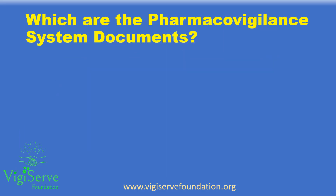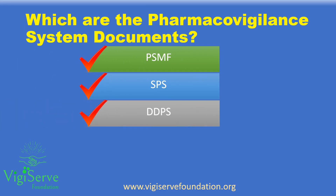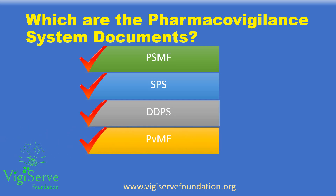We first need to understand which are the pharmacovigilance system documents. These include the PSMF, or the pharmacovigilance system master file; the SPS, or the summary of pharmacovigilance systems; and the DDPS, or the detailed description of pharmacovigilance system. Besides, there may be country-specific requirements such as the PVMF, or the pharmacovigilance master file, and the pharmacovigilance subsystem file.